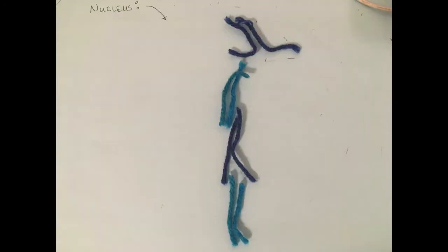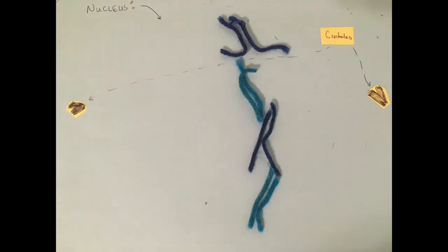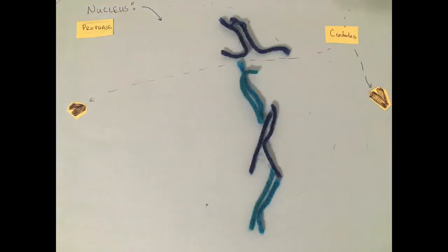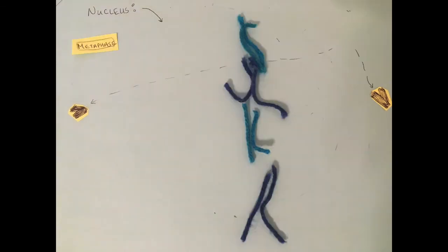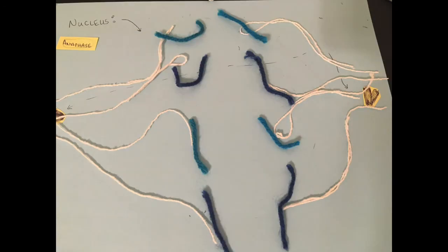But where were we? Oh right, metaphase. Before we go into the next step, there is an important organelle that we must note: the centriole. In the next step of anaphase, the centrioles send out spindle fibers to connect to one of the two sister chromatids in a chromosome.